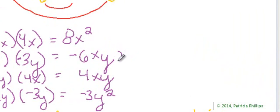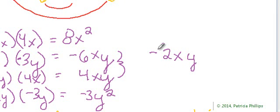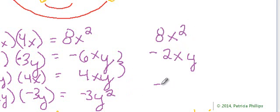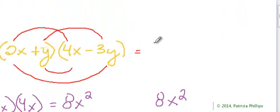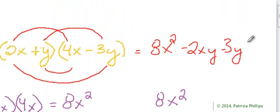So our negative 6xy and our 4xy — when we combine those we end up with negative 2xy. So we have 8x squared, negative 2xy, and negative 3y squared. The variables and exponents don't allow us to combine anything else, so the final answer is 8x squared minus 2xy minus 3y squared.